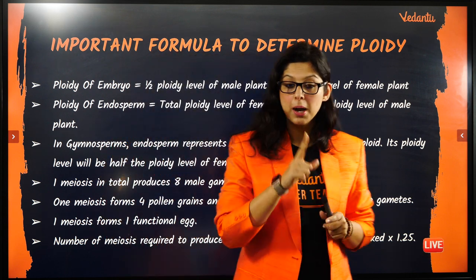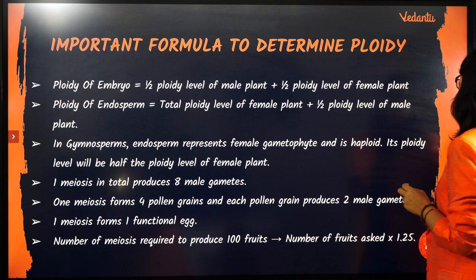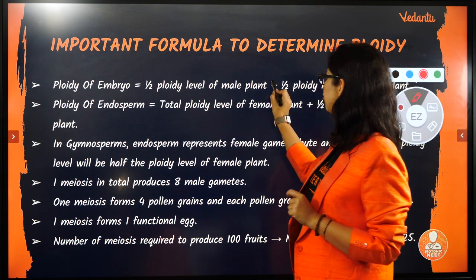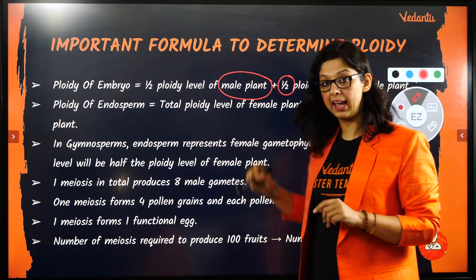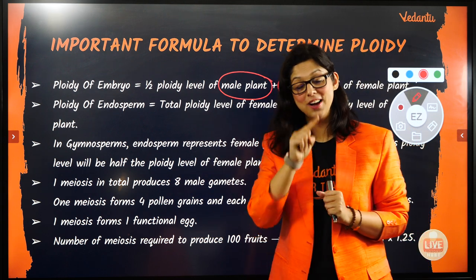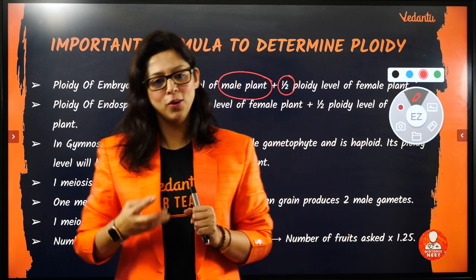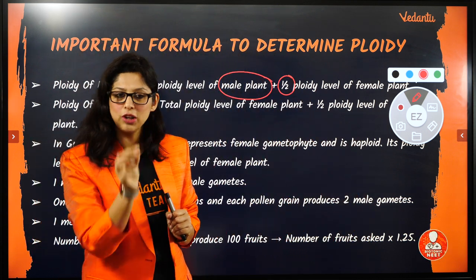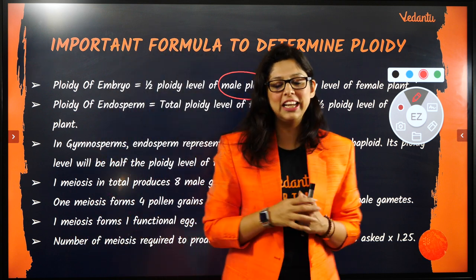If you have a question about the ploidy of an embryo, then you will have half the ploidy level of the male and half the ploidy level of the female. If the male has 4N, then it will be half, which is 2N; the female has 2N, then half is N; so the ploidy of the embryo is 3N. Just remember: half ploidy level of male plus half ploidy level of female equals the ploidy level of the embryo.